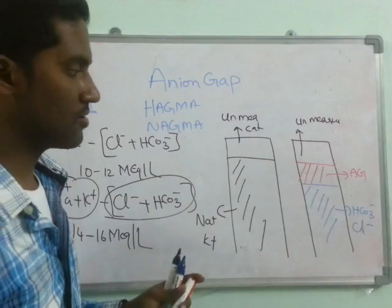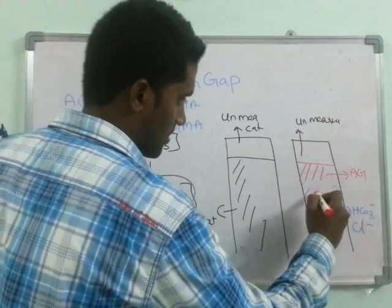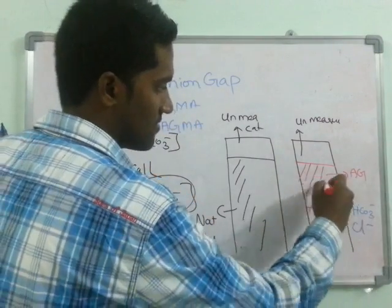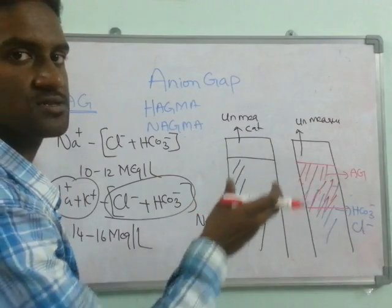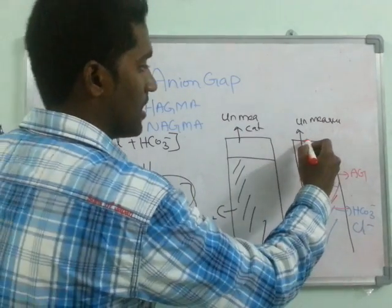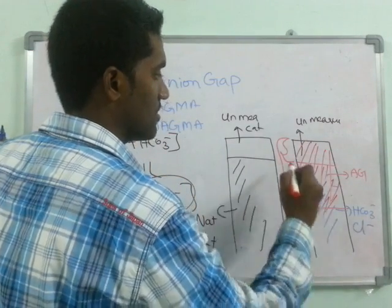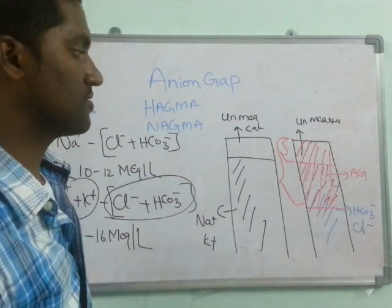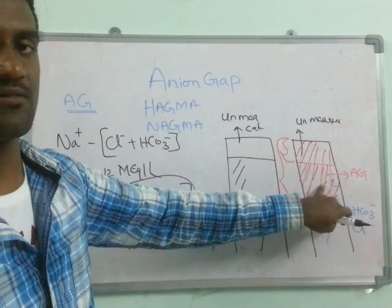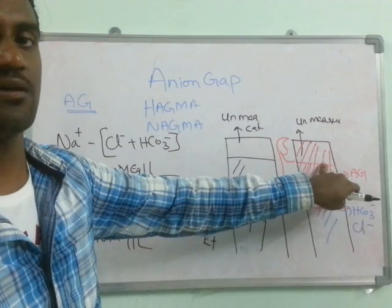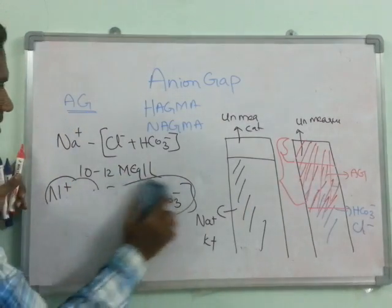Suppose there is a condition causing depletion of HCO3 minus — that compartment comes down, so you see decreased HCO3 minus and anion gap increases. Or something causing an increase in unmeasured anions — when those unmeasured anions increase, the gap also increases. So either decrease in HCO3 minus or addition of unmeasured anions into the compartment causes a change in anion gap, resulting in high anion gap metabolic acidosis.